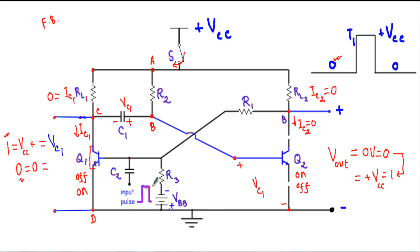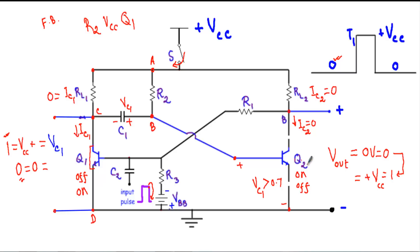The input pulse was applied for a brief interval with high amplitude. After a short time the input pulse comes from its maximum value to zero volt. Now capacitor C1 starts discharging through the path R2, VCC, and the short path of transistor Q1. That discharging voltage is applied between the base-to-emitter junction of transistor Q2. As the capacitor discharges and its voltage becomes greater than 0.7 volt, it drives the base-to-emitter junction of Q2 in forward bias. Therefore transistor Q2 will now be in on state due to the stored charge of capacitor C1, and its collector and emitter terminals again get shorted.